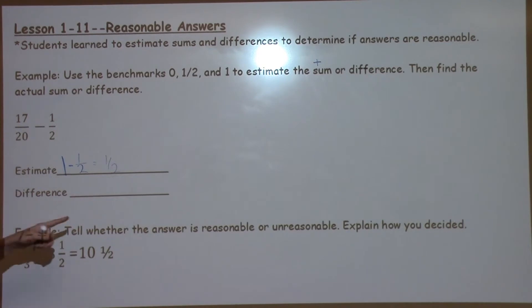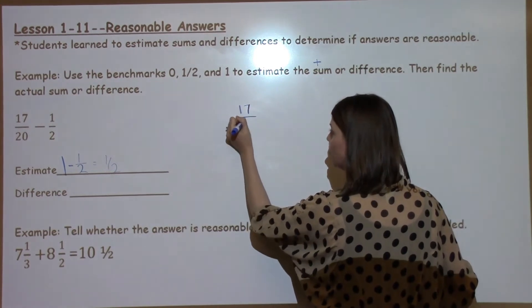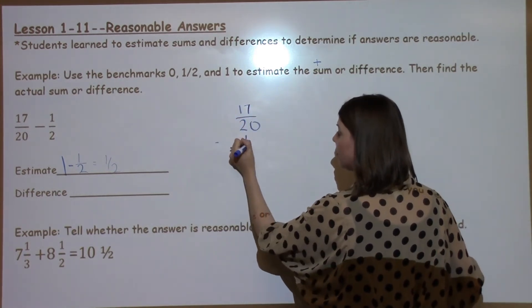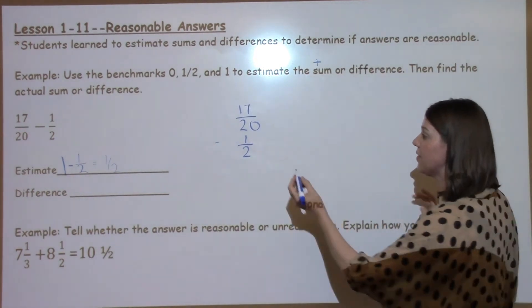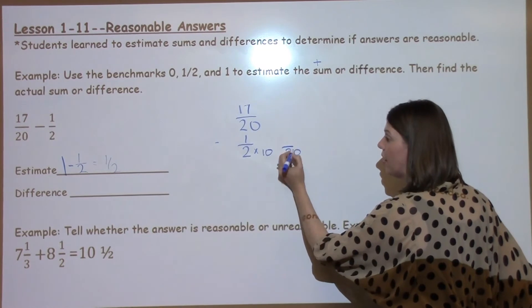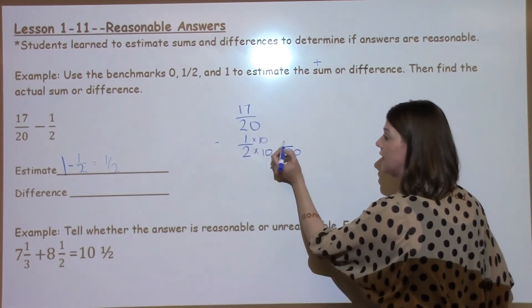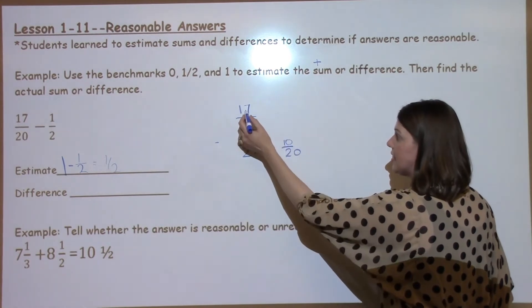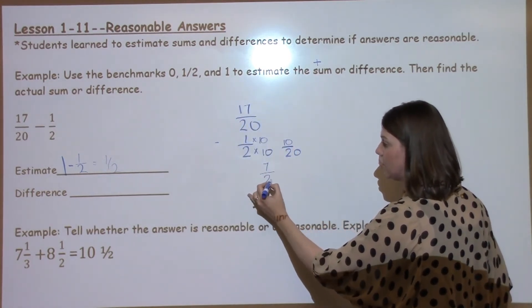When I go ahead and find the difference, my answer should be close to about 1 half. So to solve this question, I'm going to take 17 20ths minus 1 half. I see a shortcut. I know that 2 times 10 gives me 20. If I do it to the bottom, I have to do it to the top. 1 times 10 is 10. If I take 17 20ths minus 10 20ths, I get 7 20ths.